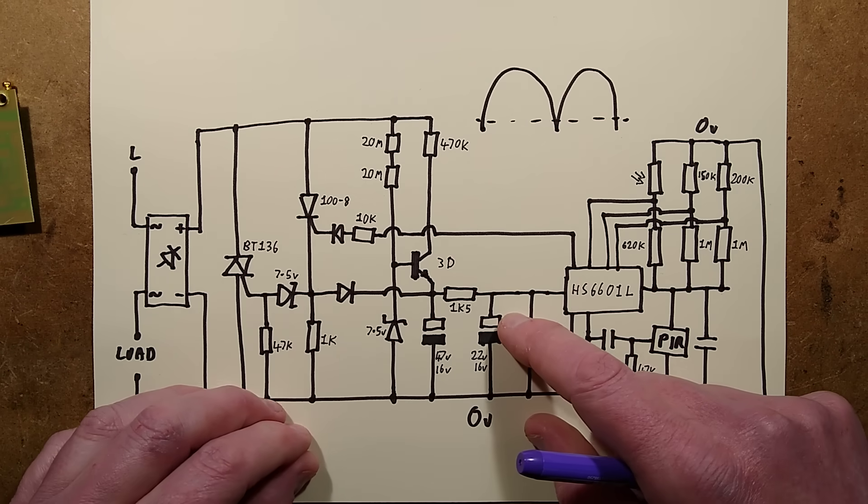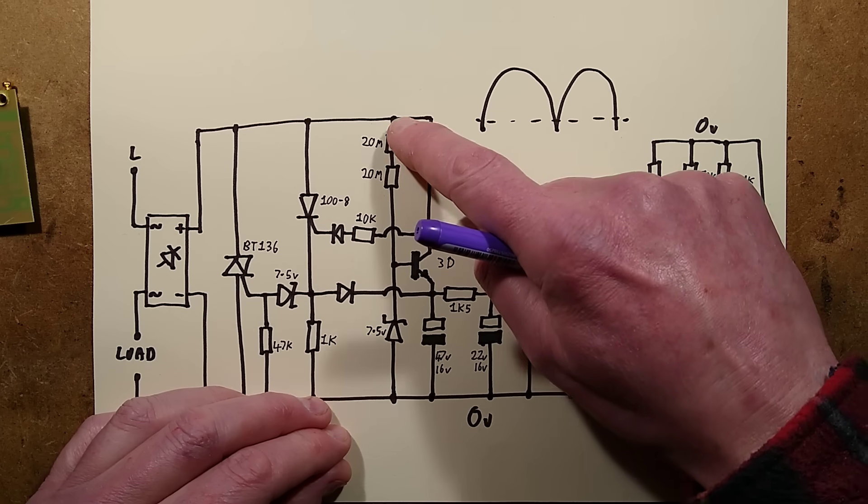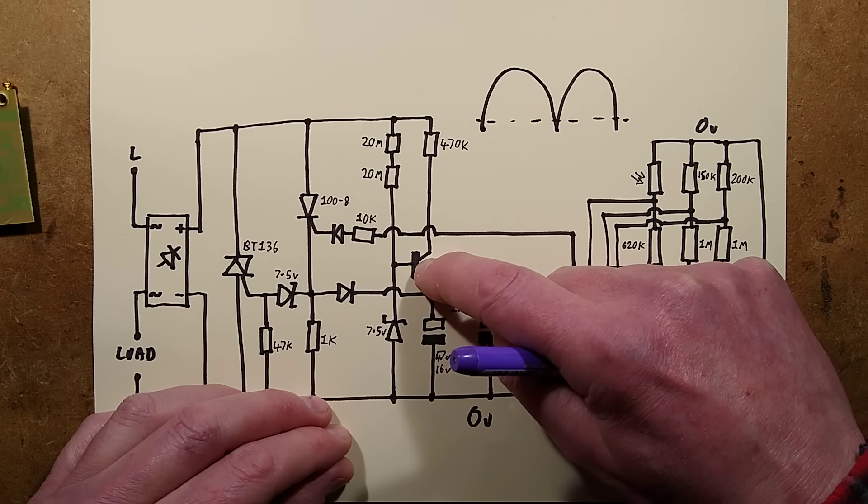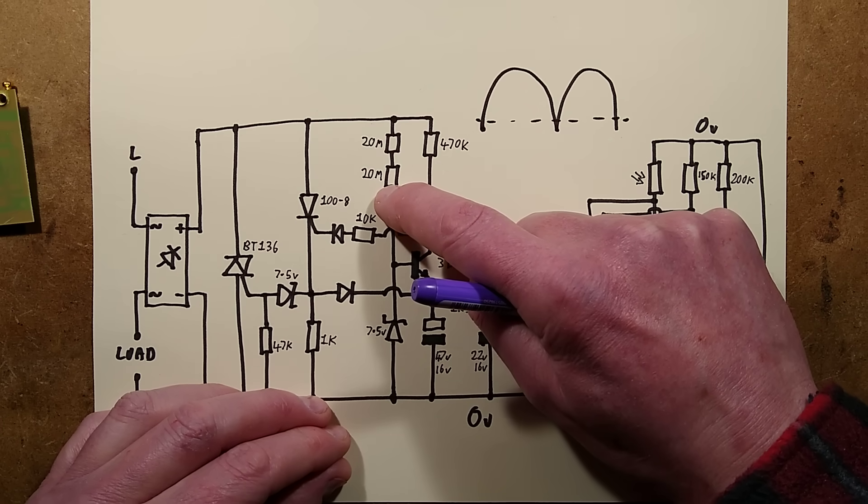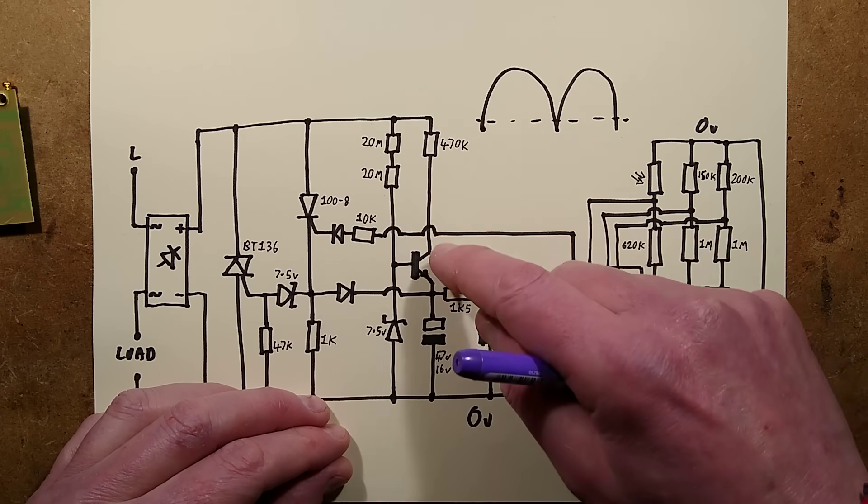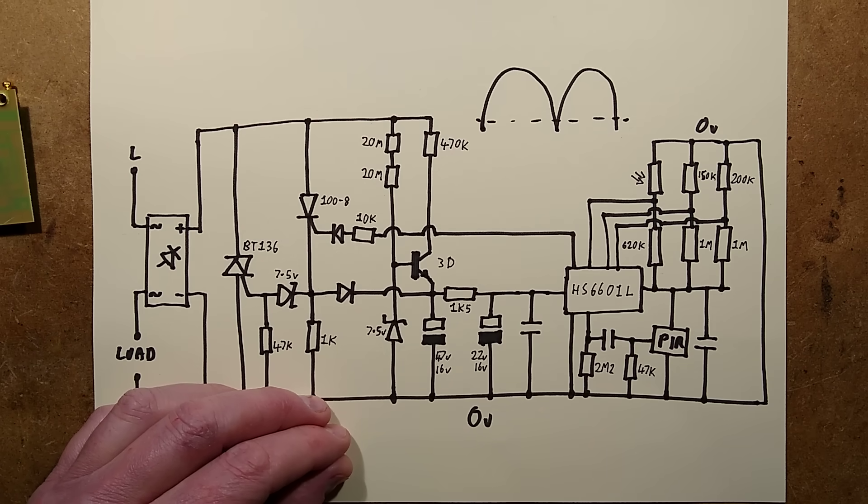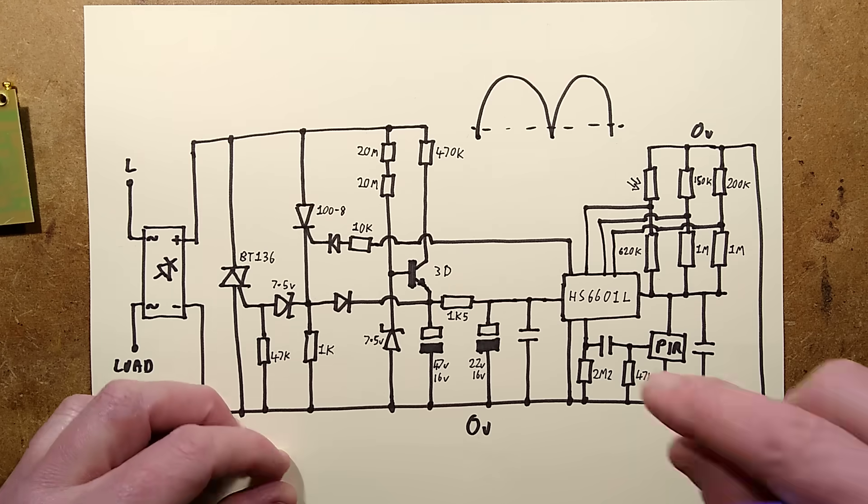When it's off however, the power supply is derived by this transistor acting as a voltage regulator. These super high value 2 times 20 mega ohm resistors adding up to... Should I brighten this up a bit? Just give me a second. I'm going to brighten this up a bit. That's better.